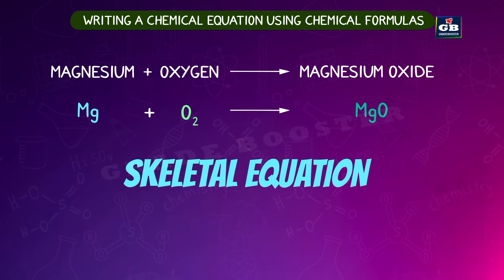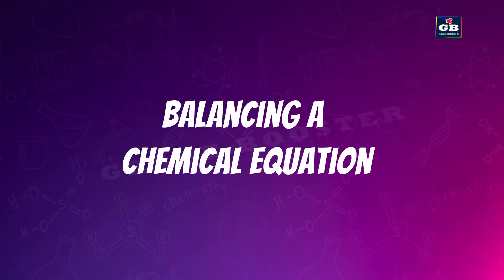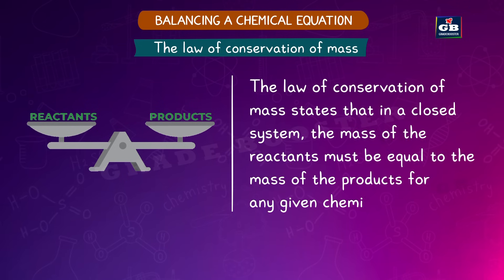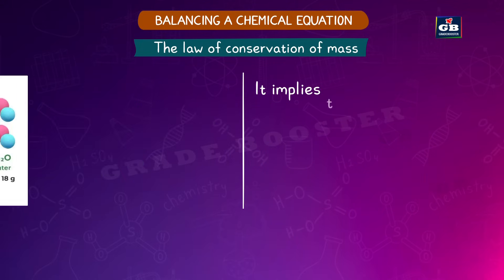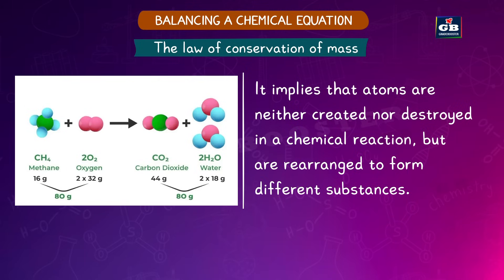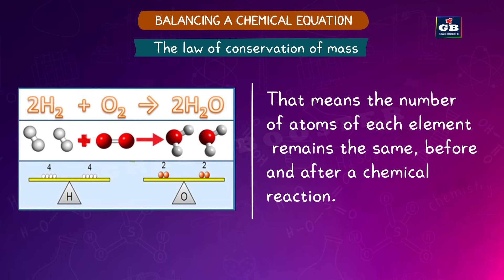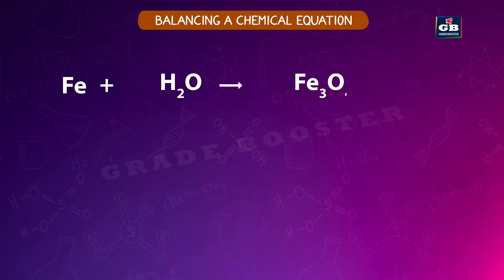To balance a skeletal equation, we apply the law of conservation of mass, which states that in a closed system the mass of the reactants must equal the mass of the products. Atoms are neither created nor destroyed in a chemical reaction — they are rearranged. So the number of atoms of each element remains the same before and after. Consider: Fe + H₂O → Fe₃O₄ + H₂.